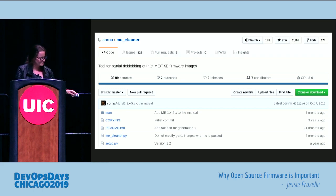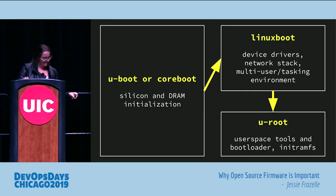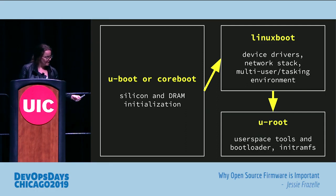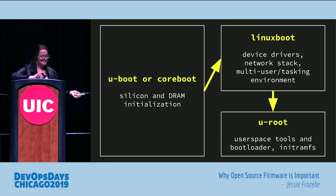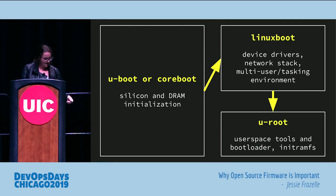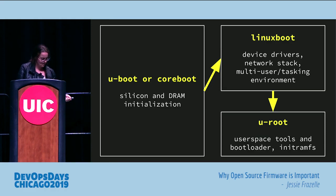How you do the management engine part is you use this tool on GitHub called ME Cleaner. For the ring negative two stack, you can use U-Boot and Coreboot — Coreboot has actually seen a lot of production usage recently. That handles silicon and DRAM initialization, then passes off to Linux Boot for device drivers, network stack, and multi-user tasking. You can use a project from Google for your userspace — it's entirely written in Go, a single binary, and super nice. It handles your init RAM filesystem and you can make patches very easily.